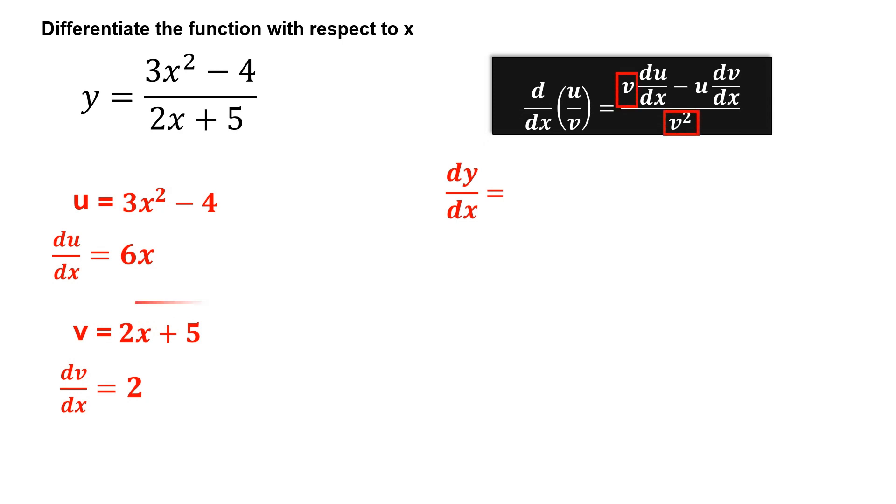For the variable v, we have 2x plus 5. For the derivative of u, we have 6x.